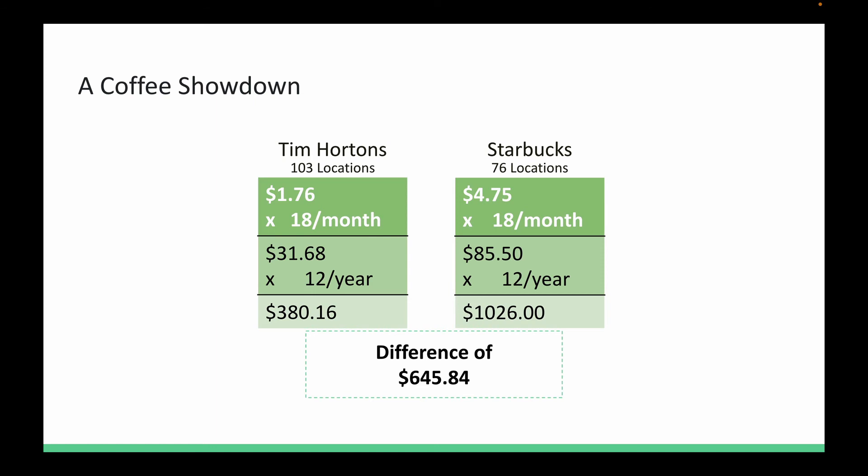Tim Hortons sells coffee at a cheaper price hoping to get more people in, while Starbucks sells at a more expensive price and changes up their stores to add a different experience. This is an example of a coffee showdown. This is competition.